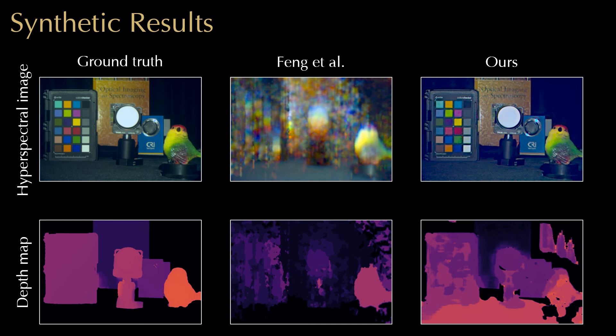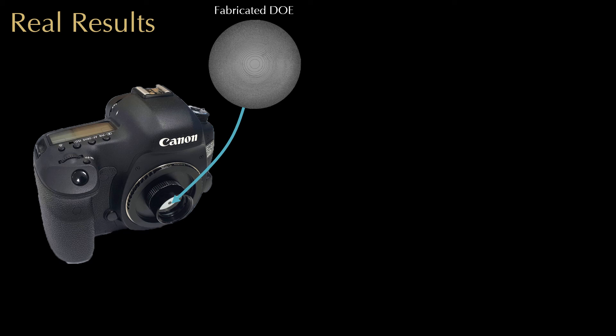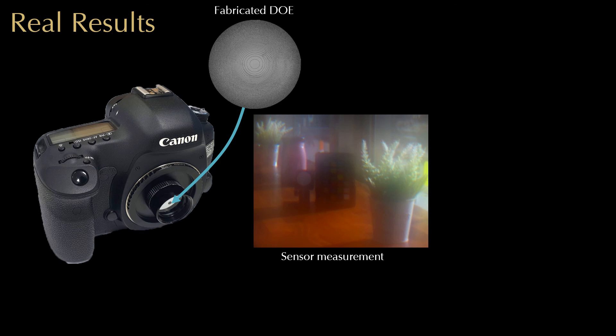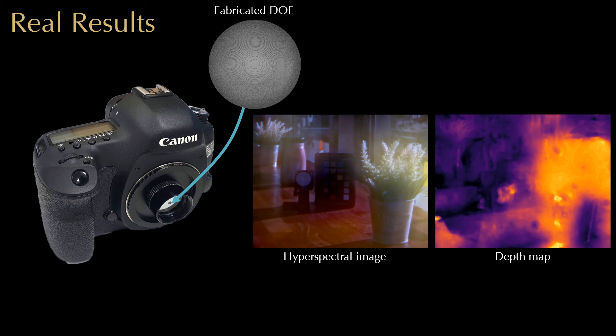We demonstrate that our method outperforms the state-of-the-art hyperspectral depth imaging method in simulation. We also experimentally validated our method by fabricating the learned DOE and building a prototype camera. Given a sensor measurement, we reconstruct a hyperspectral image and a depth map.